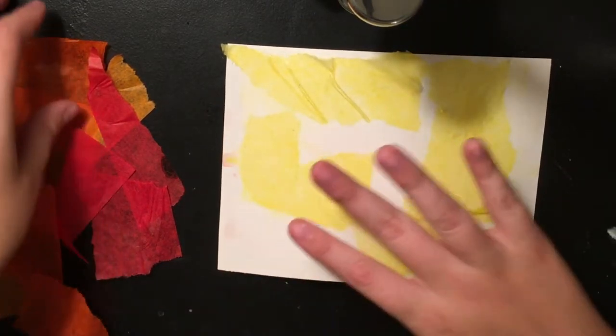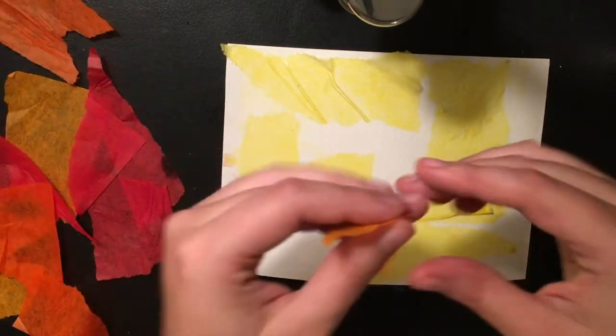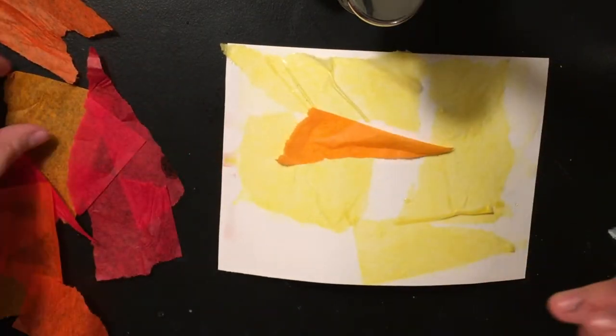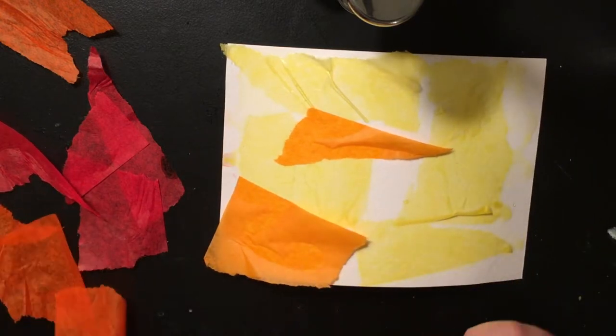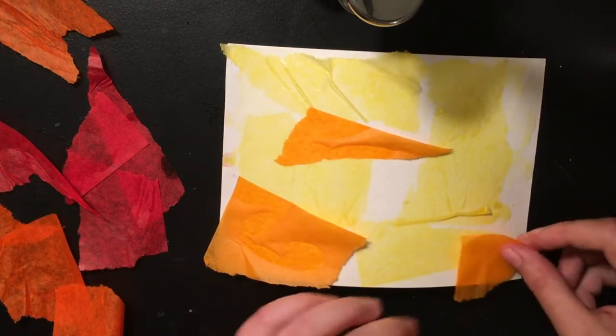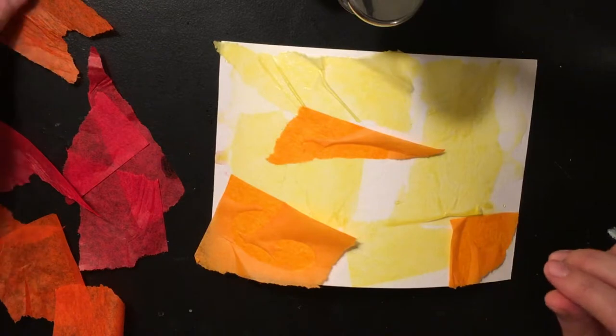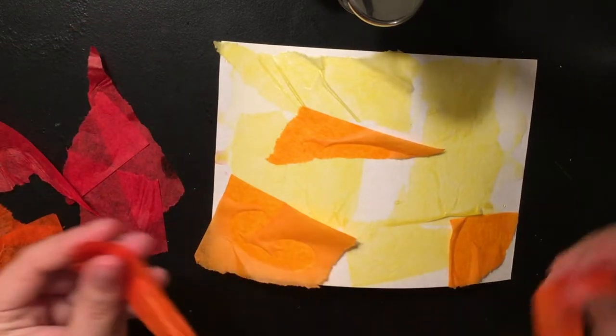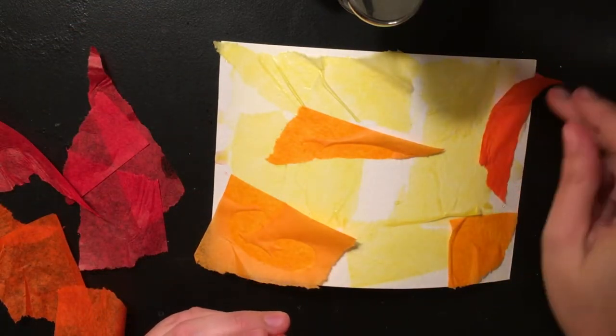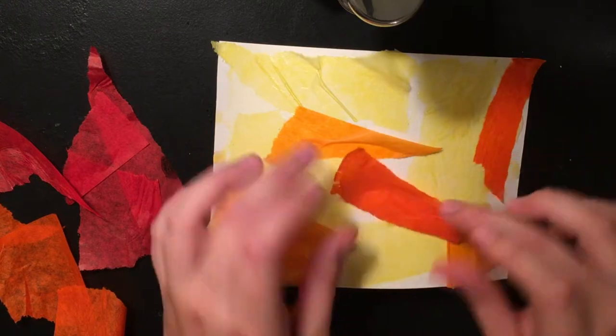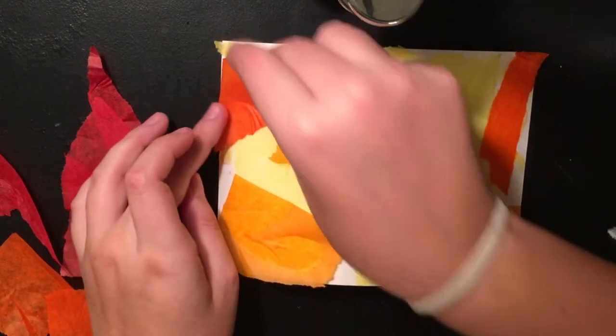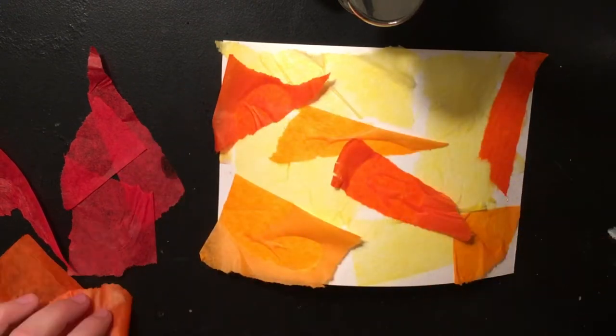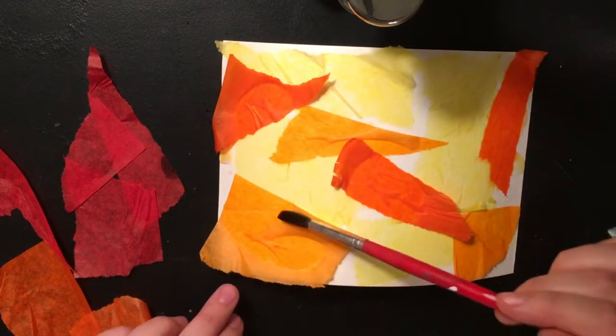Okay, once you've got that first layer done, you can go back with your next color and begin placing that in different random spots. You can tear the pieces a little bit smaller if you need to, you can layer them on top of one another. Once you're good with those placements, just go back over.